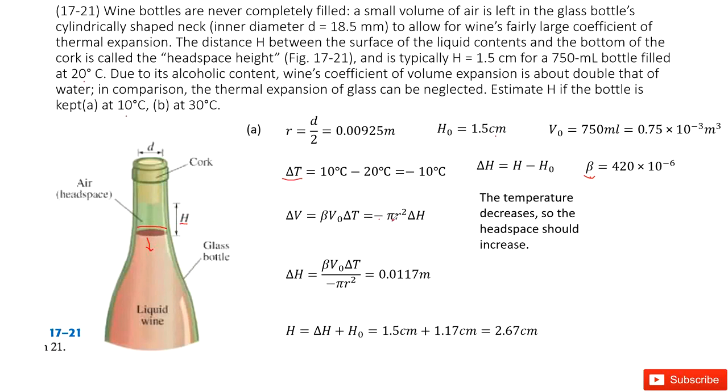This gives us the cross sectional area for this headspace. And times delta h, how much it changes. Delta h. And then we can get the function for delta h. Input all the known quantities. You can get the number there.